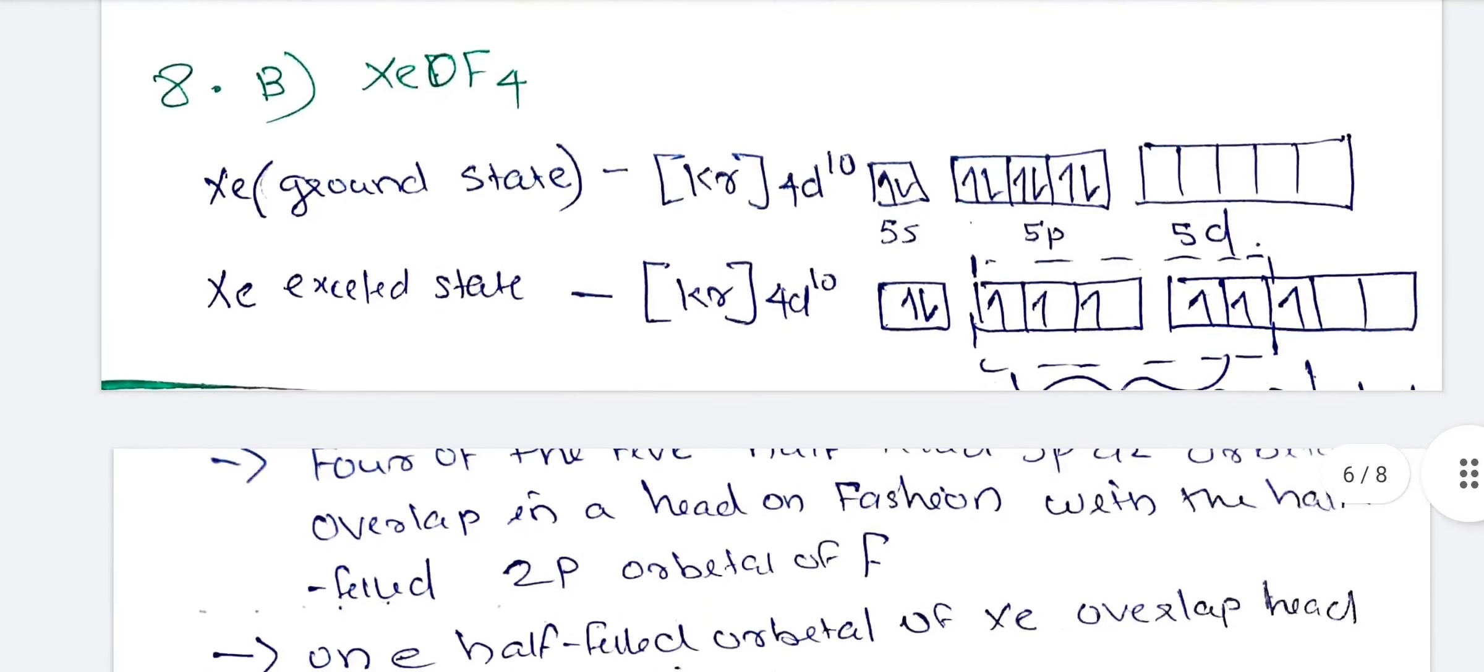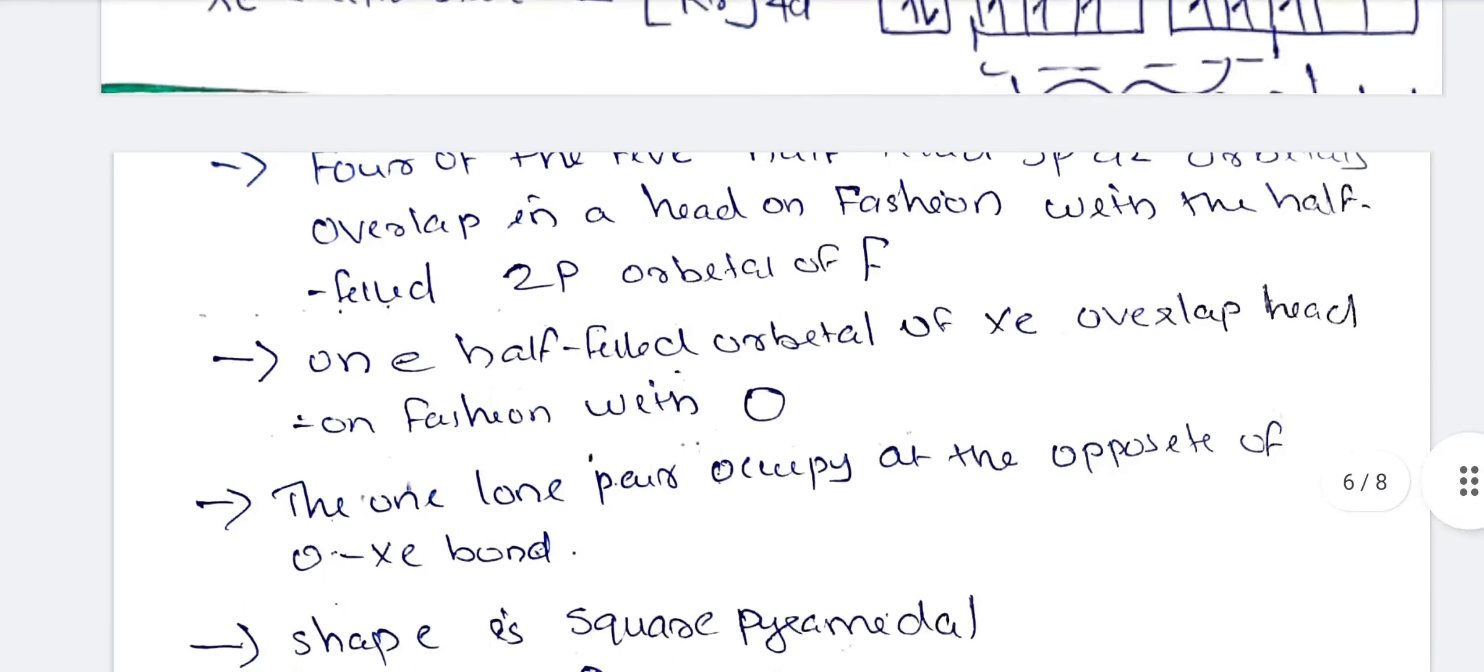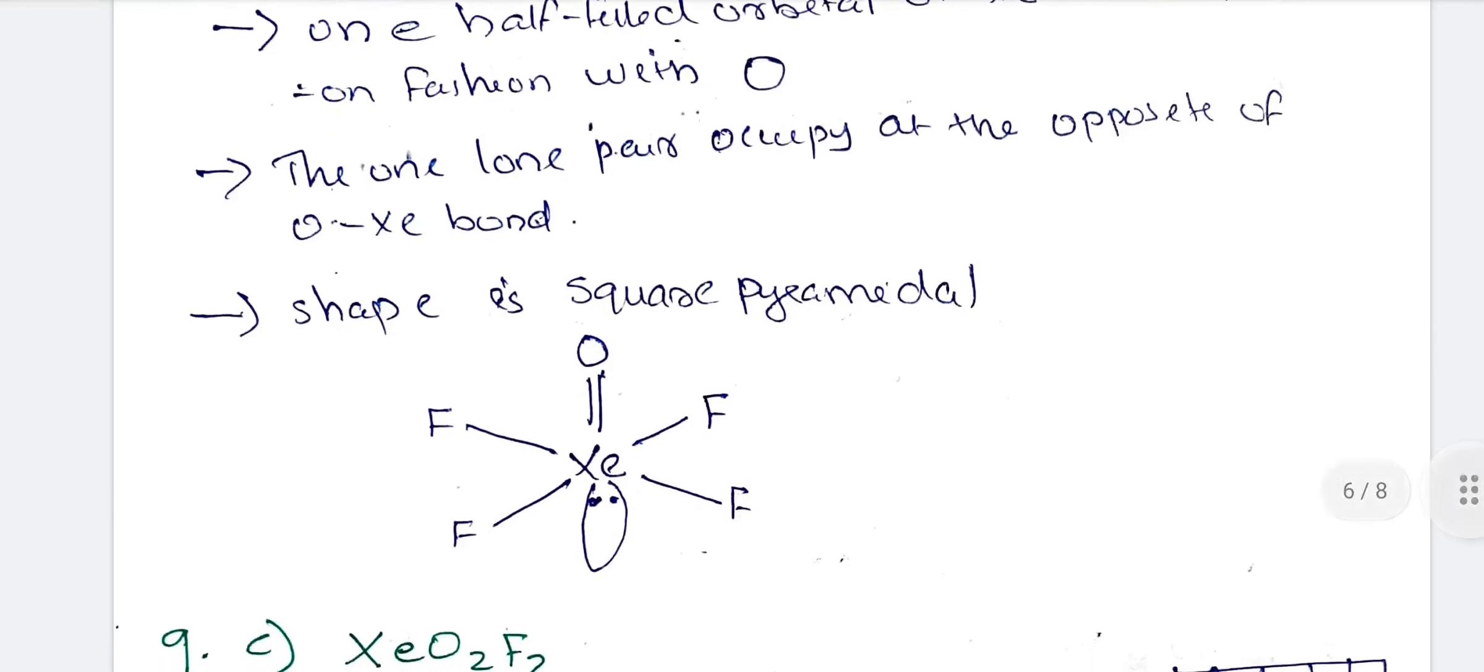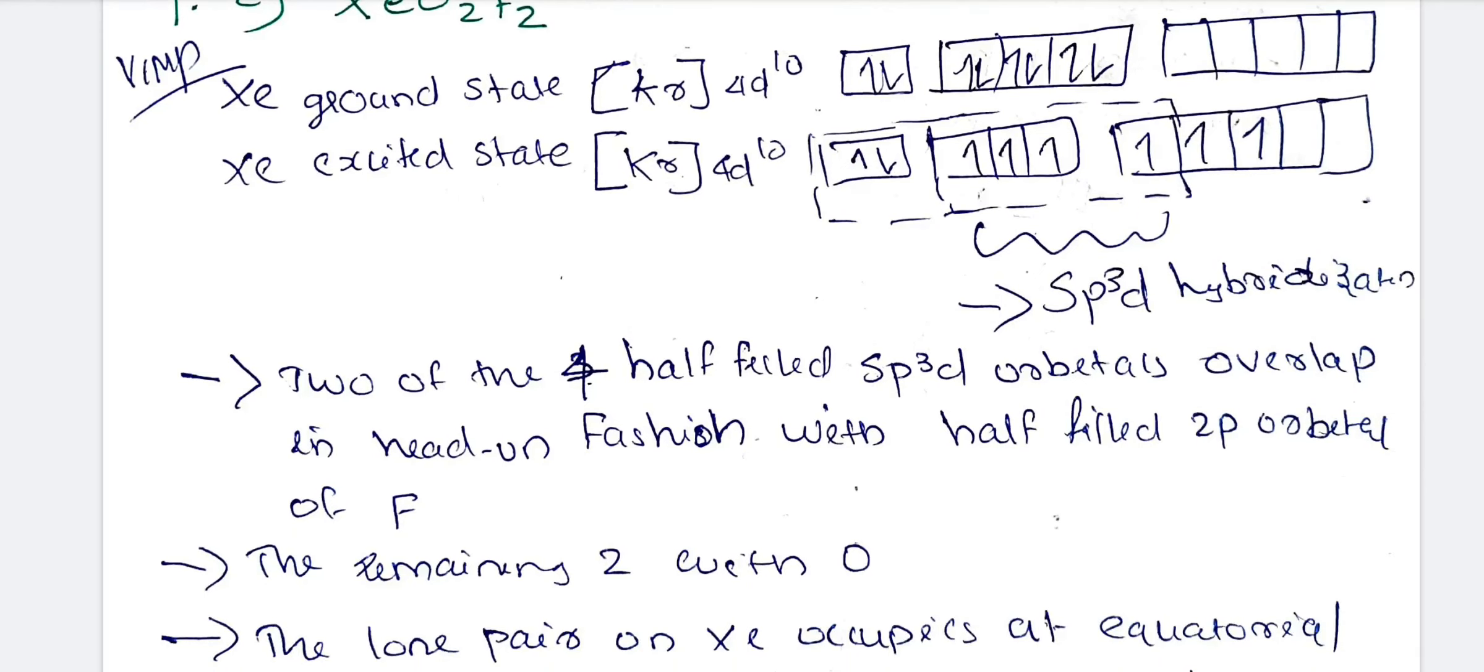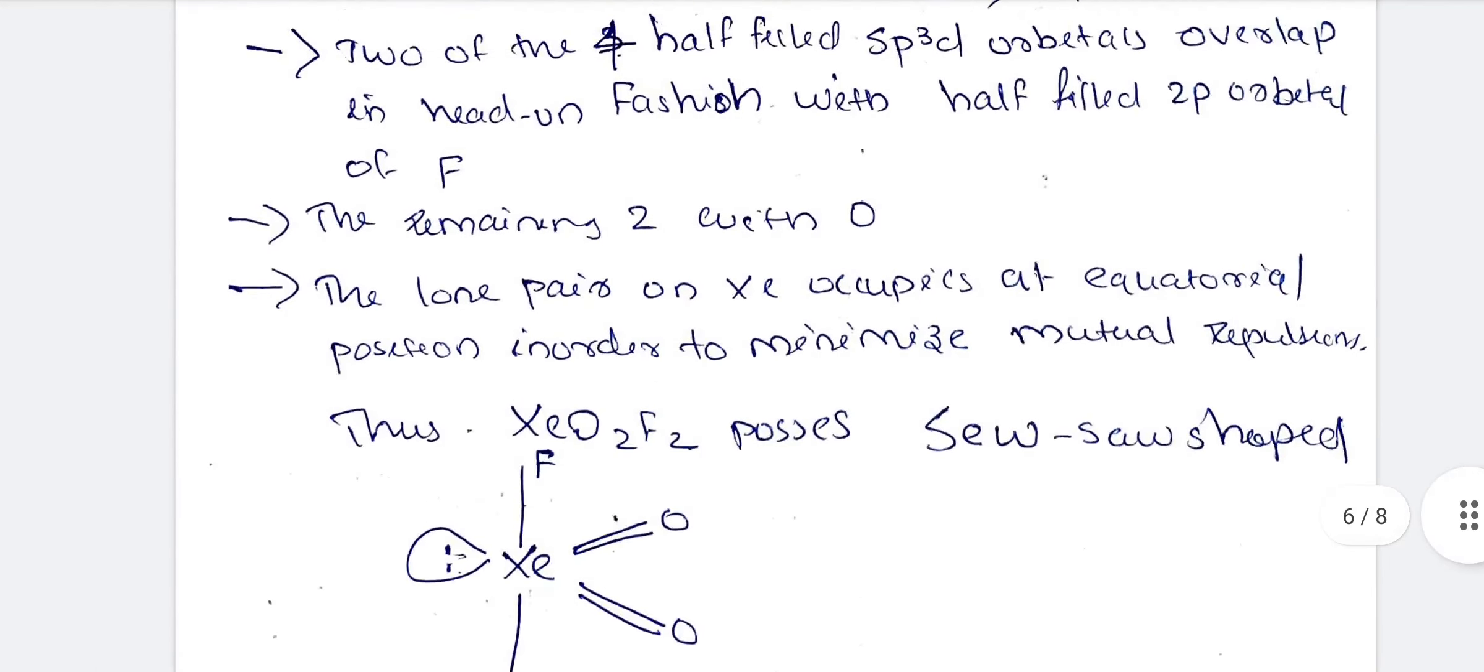Next is XeOF4. Excitation occurs and we consider sp3d2 hybridization. This structure is a see-saw shape. T-shape and see-saw shape are different. There's a chance this will appear in exams.